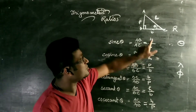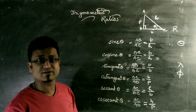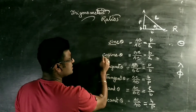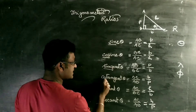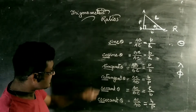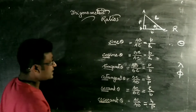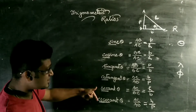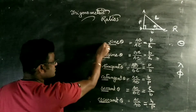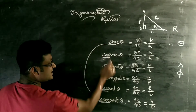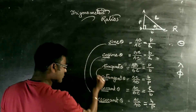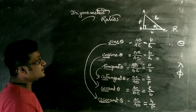Sin theta is the ratio of perpendicular to hypotenuse in a right angle triangle. The six trigonometric ratios are: sine, cosine (cos), tangent (tan), cotangent (cot), secant (sec), and cosecant (cosec). Notice that sine and cosec are opposites — P by H and H by P. Similarly cosine and sec are opposites — B by H and H by B. Tangent and cot are opposites — P by B and B by P.